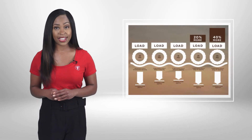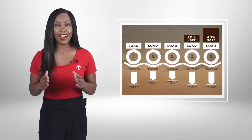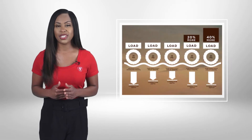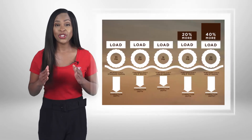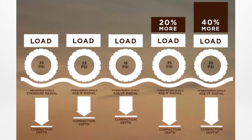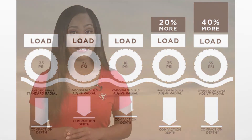Tires with IF technology allow farmers to carry even more load — 20% more load to be exact. And the VF tire will allow farmers to carry up to 40% more load and produce a larger footprint.